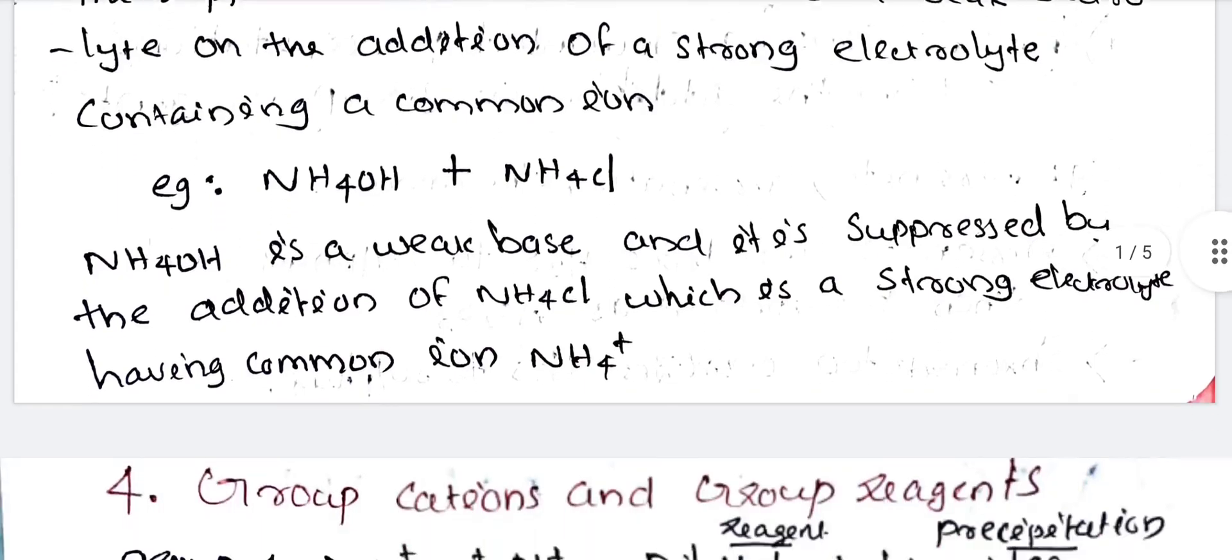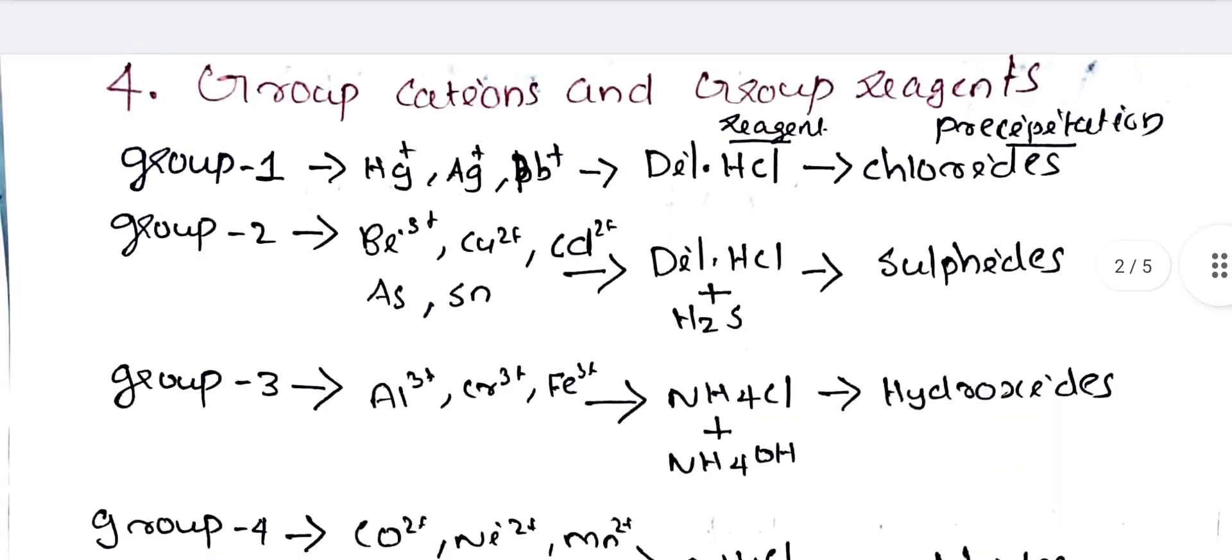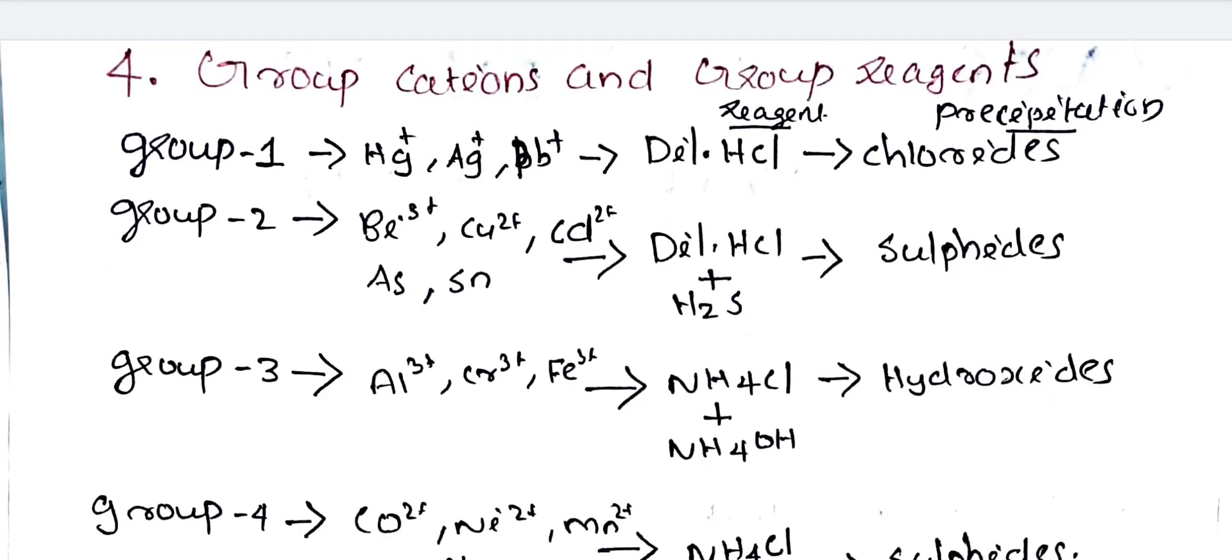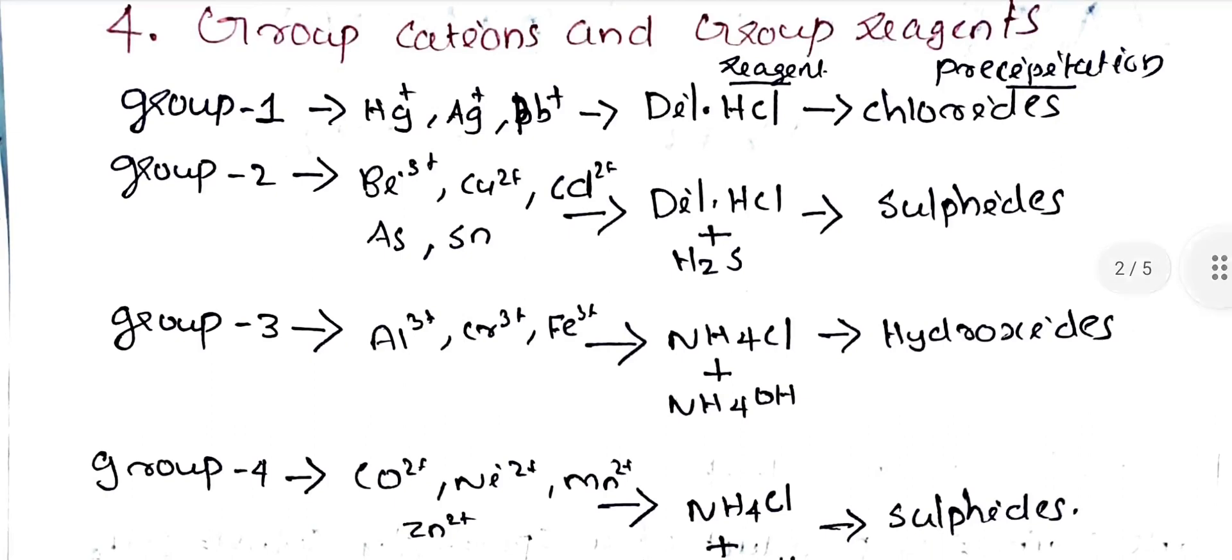What are the group cations and group reagents? Group 1 is mercury, silver, lead. The group reagent is dilute HCl and the precipitate is chlorides. Group 2 is bismuth, copper, cadmium, arsenic, tin. The reagent is dilute HCl and H2S. It precipitates sulfides.